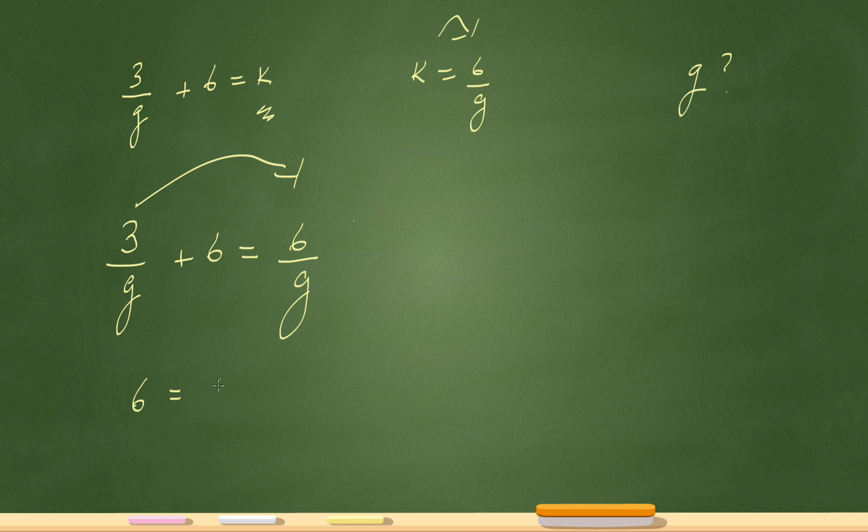So over here I'll have 6 equals 6 over g minus 3 over g. Remember, all I've done so far is just brought this to the other side, nothing else. And then from here, let's bring it up here. I'm just going to rewrite this over here too: 6 equals 6 over g minus 3 over g.